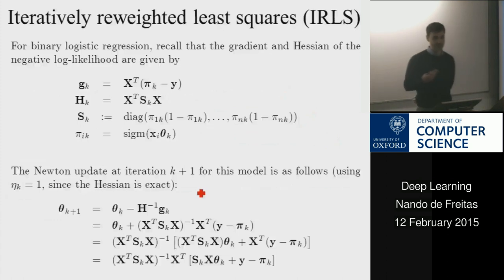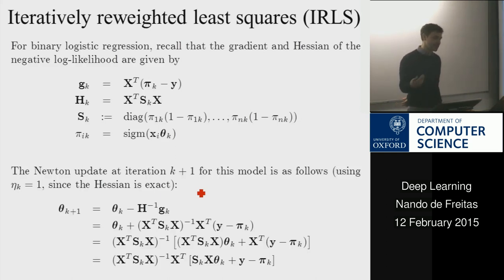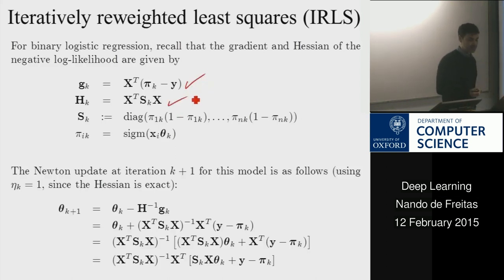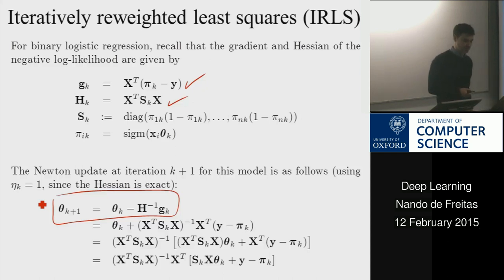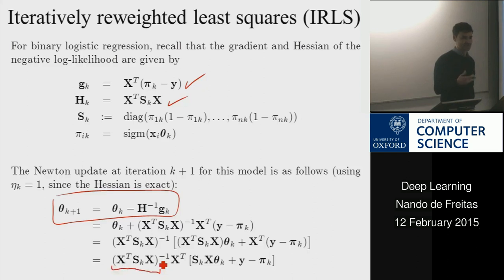One way to optimize: if you've done the practical, you've already tried a few ways in Torch. The classical way is the Newton method — we have expressions for the gradient and Hessian, so we just plug them in. People often call this a reweighted least squares problem: the update looks just like least squares, xᵀx inverse, but weighted by a diagonal matrix S. That's why it gets this name.